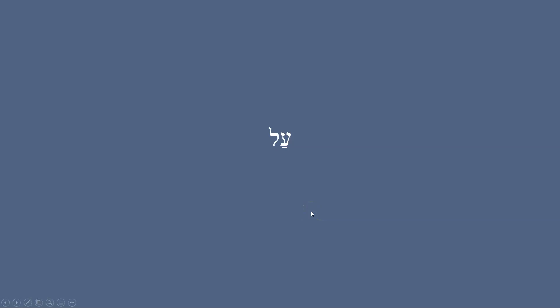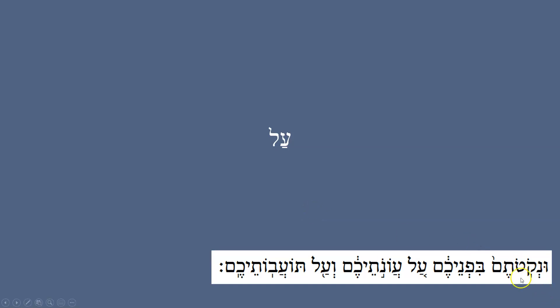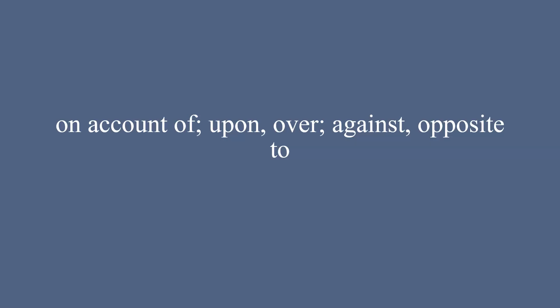'Al' means 'concerning.' My Hebrew professor said if you can remember the name of the Israeli airline El Al — 'to upon' — that may help you remember it. This is from Ezekiel 36: 'and you will be loathsome in your own face concerning your wickednesses and concerning your abominations.' So 'al,' concerning — and then 'and concerning' — that's how this word appears in the text.